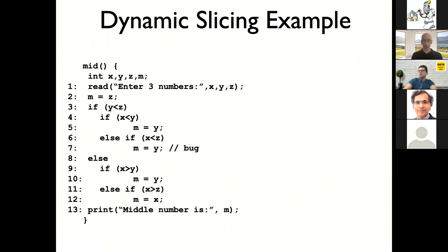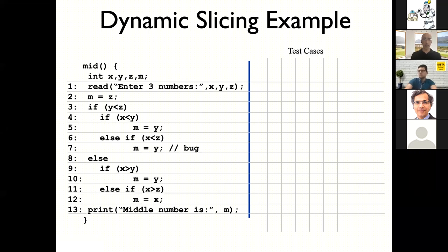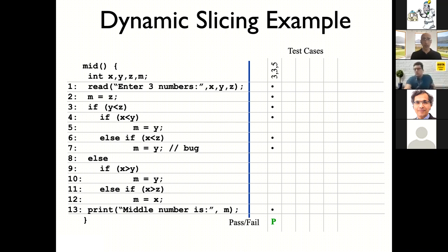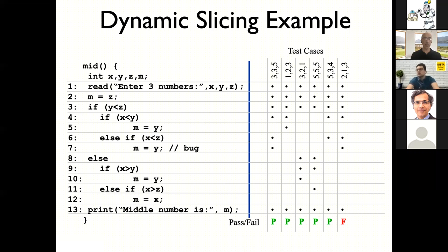Let me give you a quick idea of how dynamic slicing works. We add some test cases and for each one show the input — three numbers — whether it passed or failed, and which statements were covered. With 3, 3, 5 as inputs, these are the statements covered and the test passes. I have six test cases total — five pass and one fails — which shows even on a small example how difficult it might be to find the bug, since the majority of test cases actually pass.